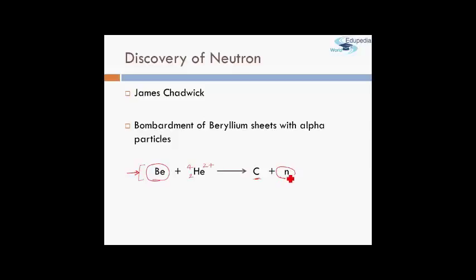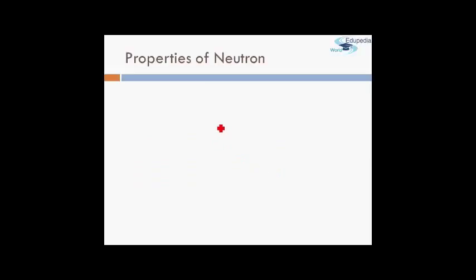These new unknown particles were represented by the small letter 'n'. They were found to be common to all elements — not just beryllium, but all elements in our periodic table have these particles. We don't need to go into the details of the experiment for our syllabus, but we do need to study this particle represented by 'n', which is the neutron.